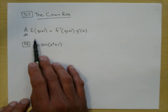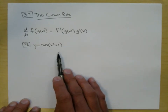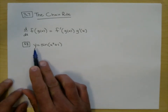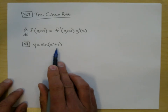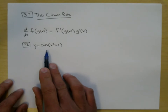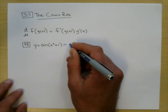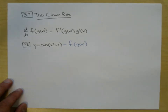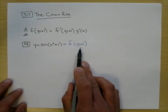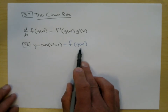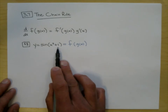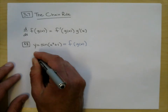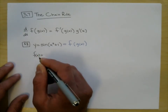We are not going to do the proof on this. This problem says y equals the sine of x squared plus 1. That can be considered a composition — f of g of x. I'm going to do this problem the textbook way, and then after that I'll show you a quicker way.